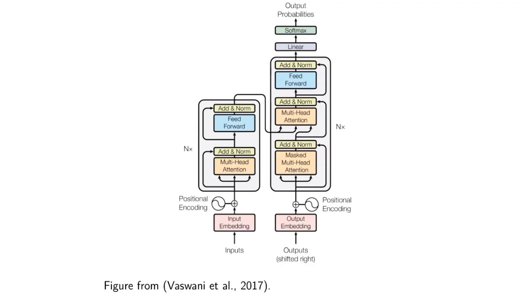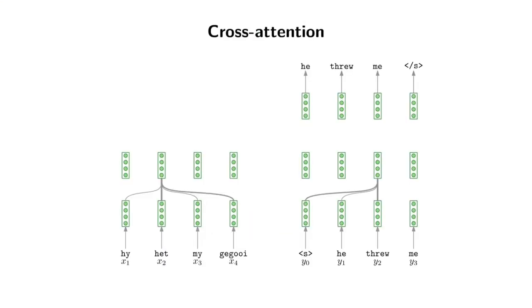At the bottom layers of the decoder you have masked multi-head attention so that you can't look into the future of the words you've already produced in the translated language. But then you use cross-attention to look back at what happened in the encoded sentence. Let me draw a simpler diagram which showcases it a bit more clearly — I've simplified it to a single head so we can just understand cross-attention.